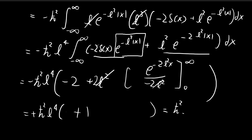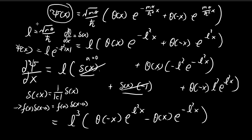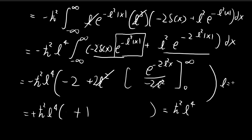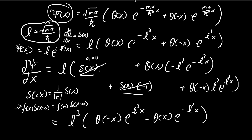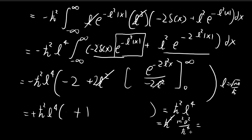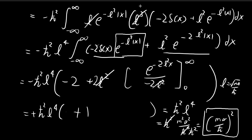Now substituting back: l = √(mα/ℏ²), so l⁴ = m²α²/ℏ⁴. Multiplying ℏ²·l⁴ gives ℏ²·m²α²/ℏ⁴ = m²α²/ℏ². Wait — noting a copying error, the denominator should be ℏ, making l = √(mα/ℏ), so l⁴ = m²α²/ℏ², and after cancellation with ℏ², the final result is ⟨p²⟩ = mα/ℏ², which is exactly what we expect.